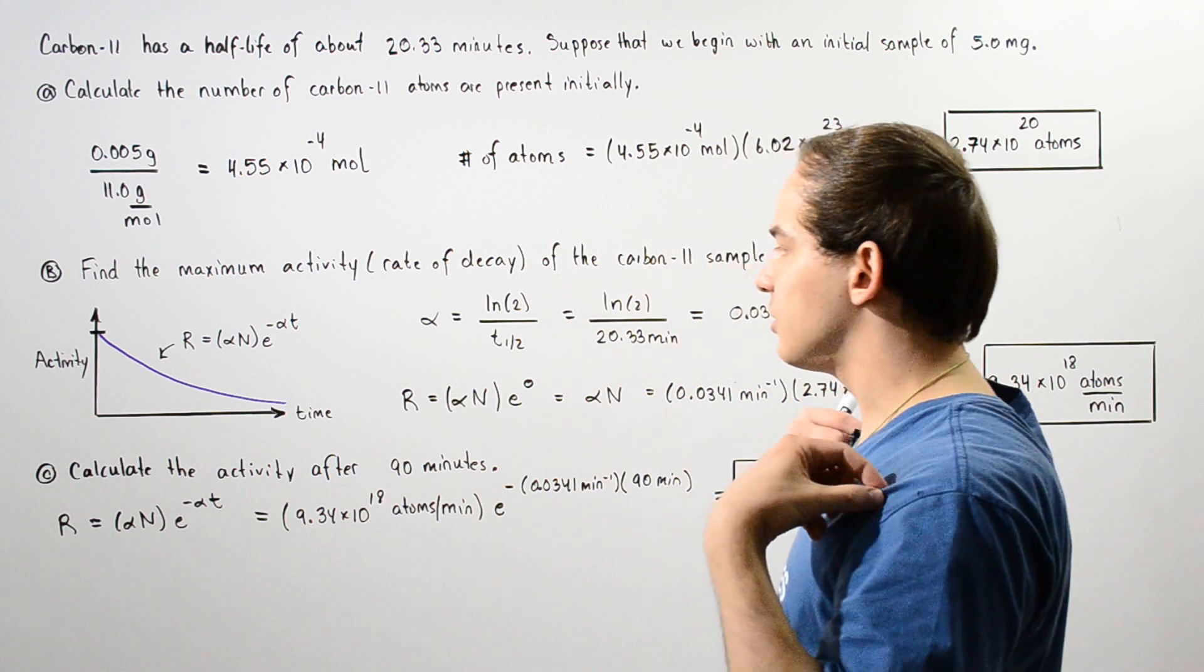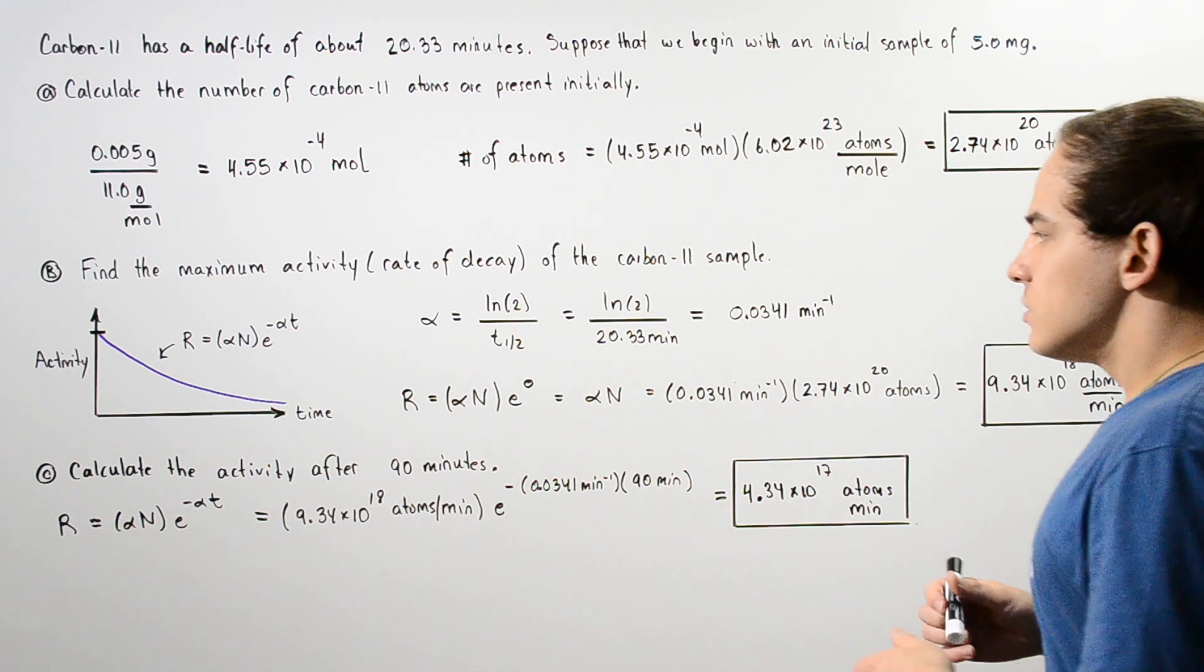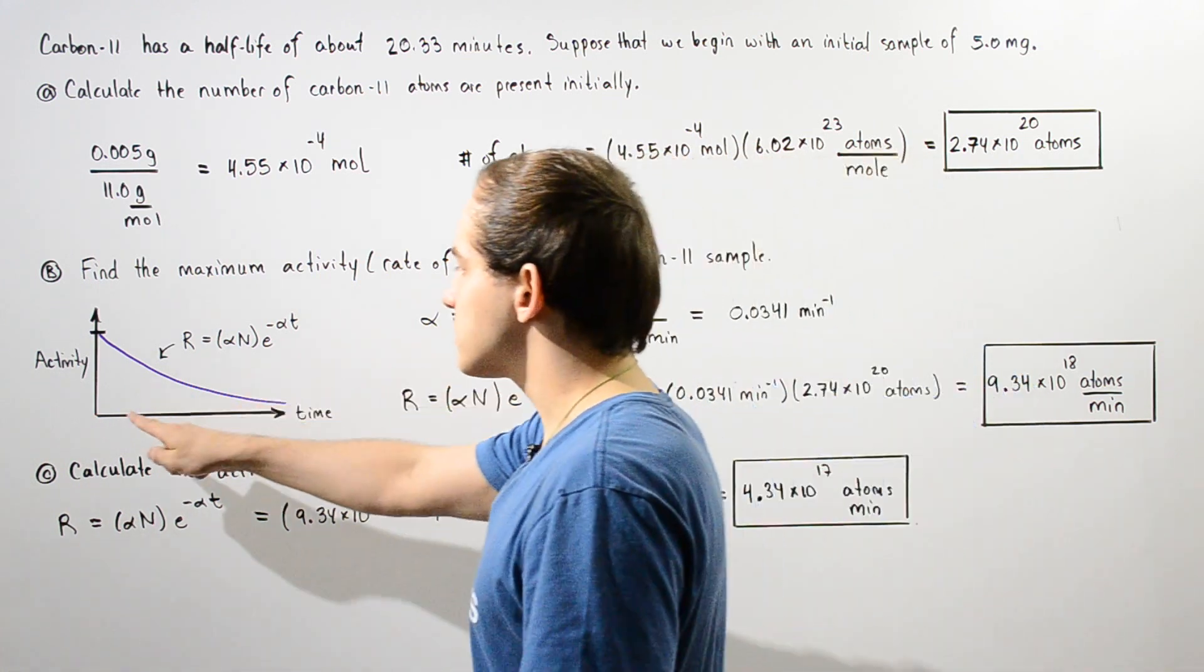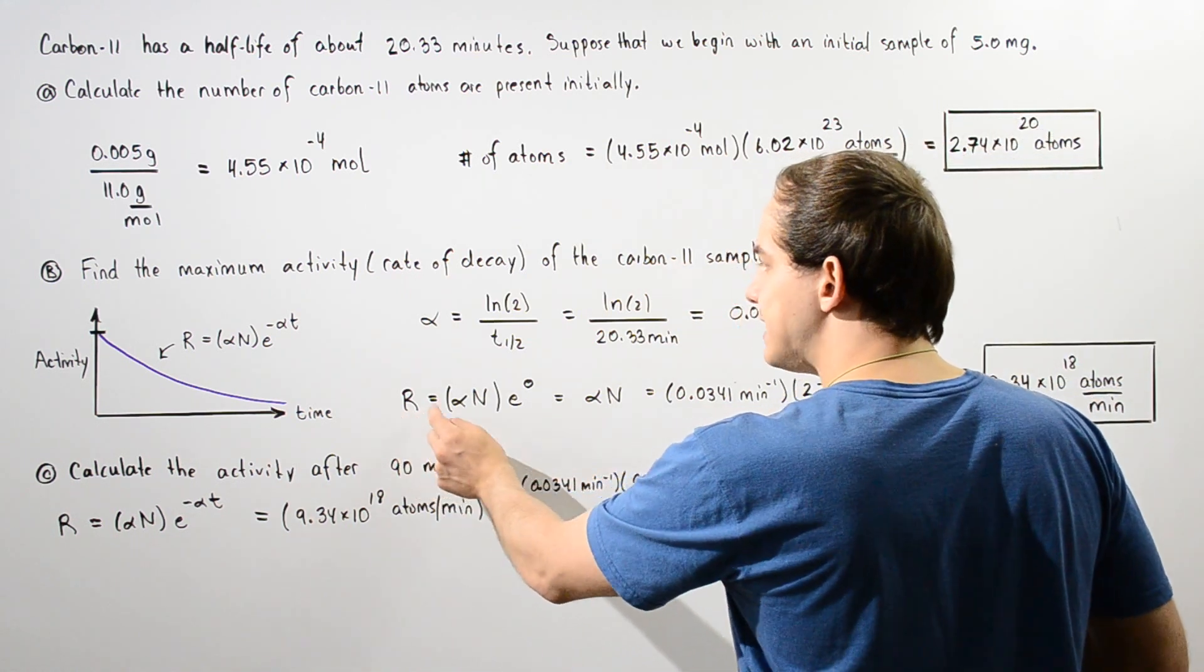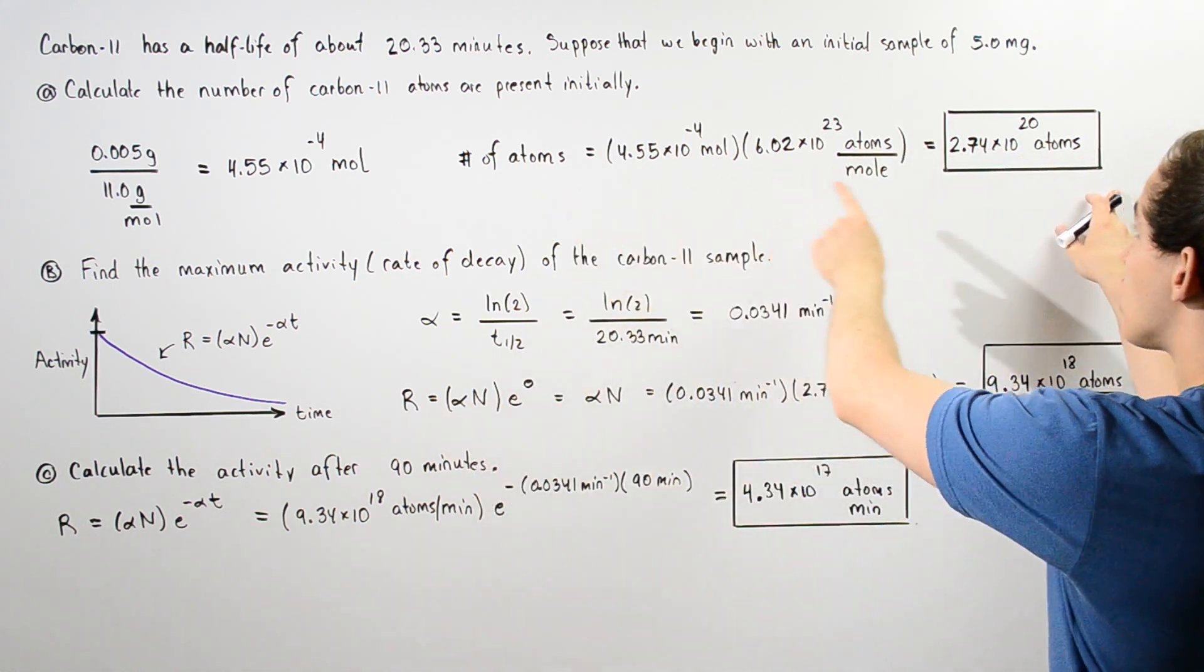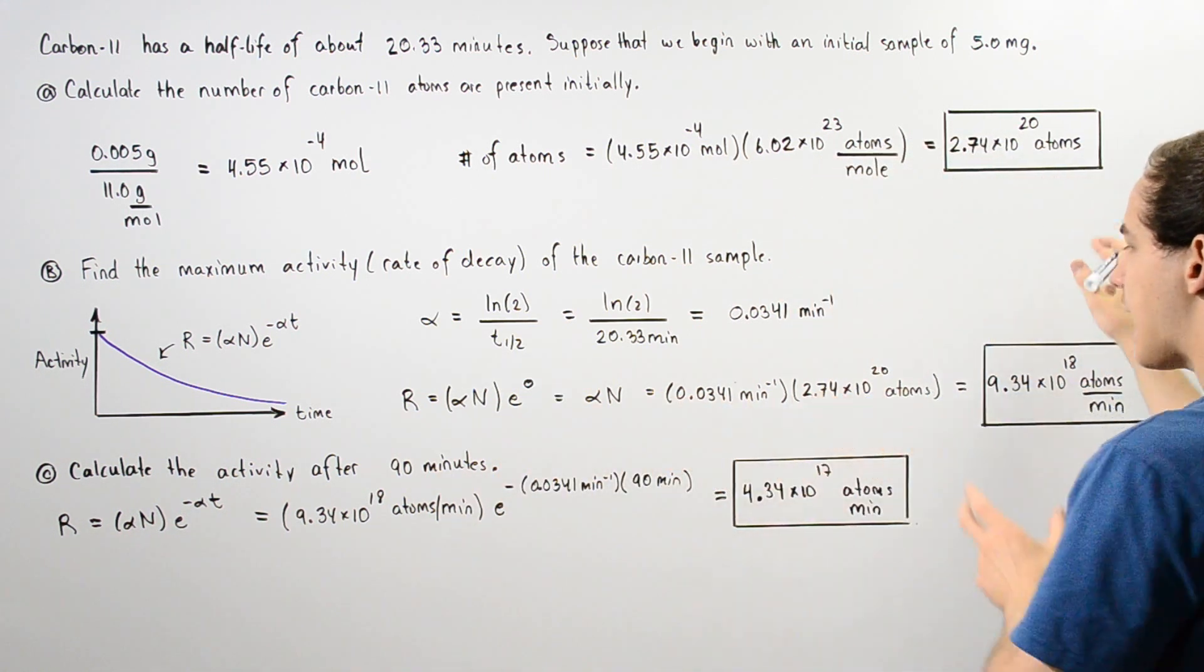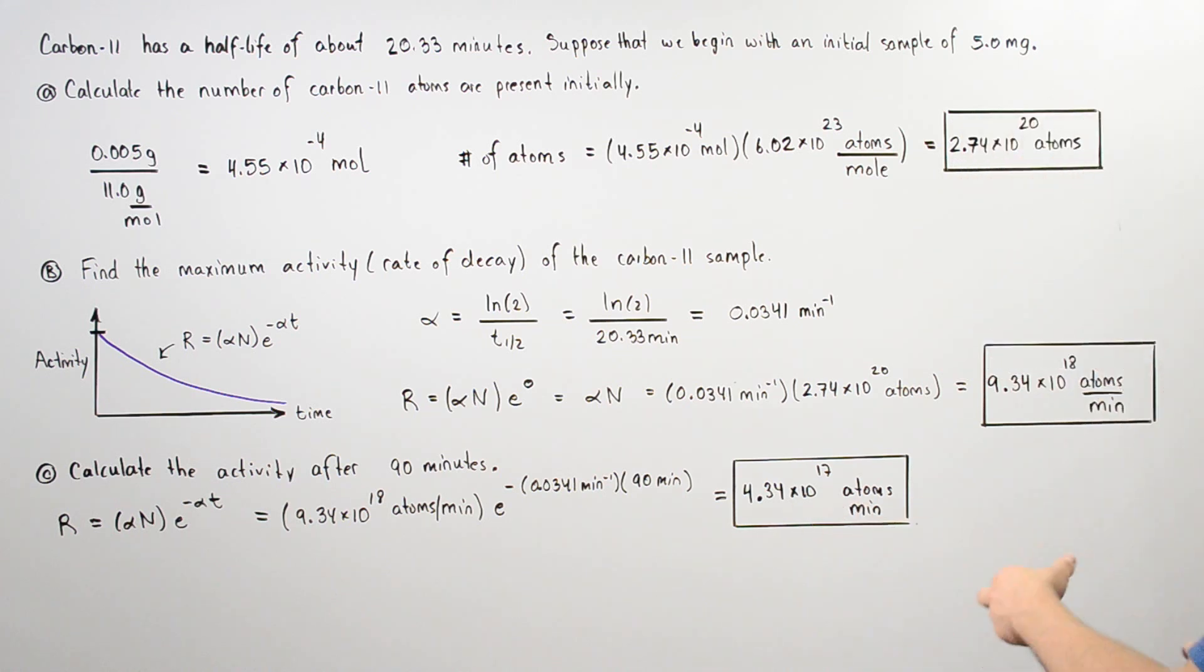Now that we know what the alpha value is, we can basically calculate what the maximum activity is. So we take this equation and we set our time equal to zero because that corresponds to maximum activity. So the maximum activity R is equal to the product of alpha, the decay constant N, which was calculated in part A to be this value, multiplied by e to the zero, which is simply one. So we plug in our values and we see that the rate of decay, the maximum rate of decay at a time of zero is given by this value, 9.34 times 10 to the 18 atoms per minute.